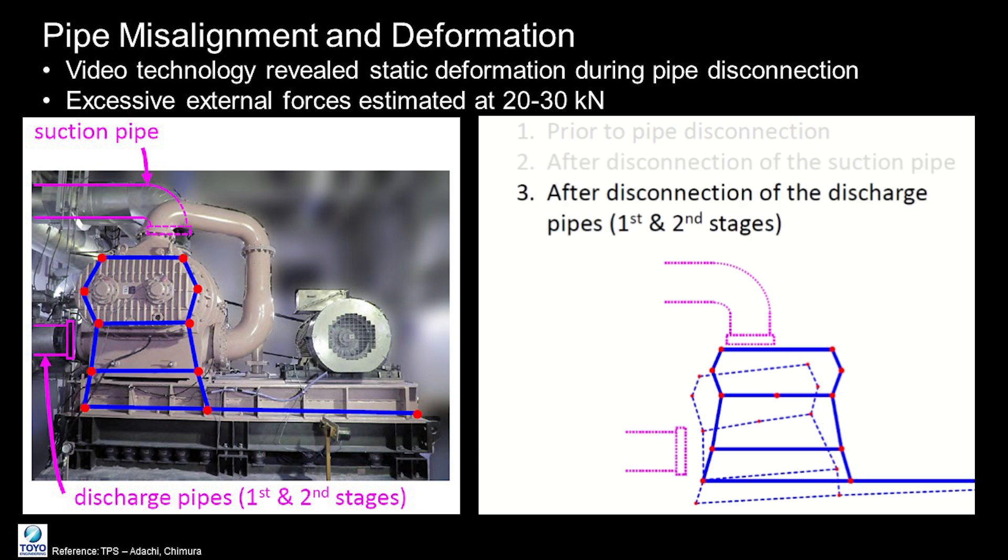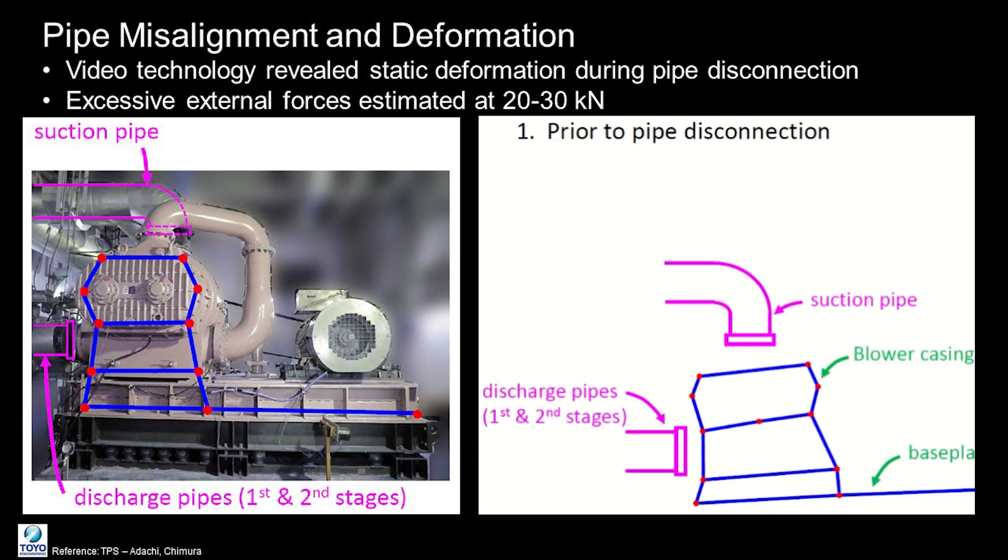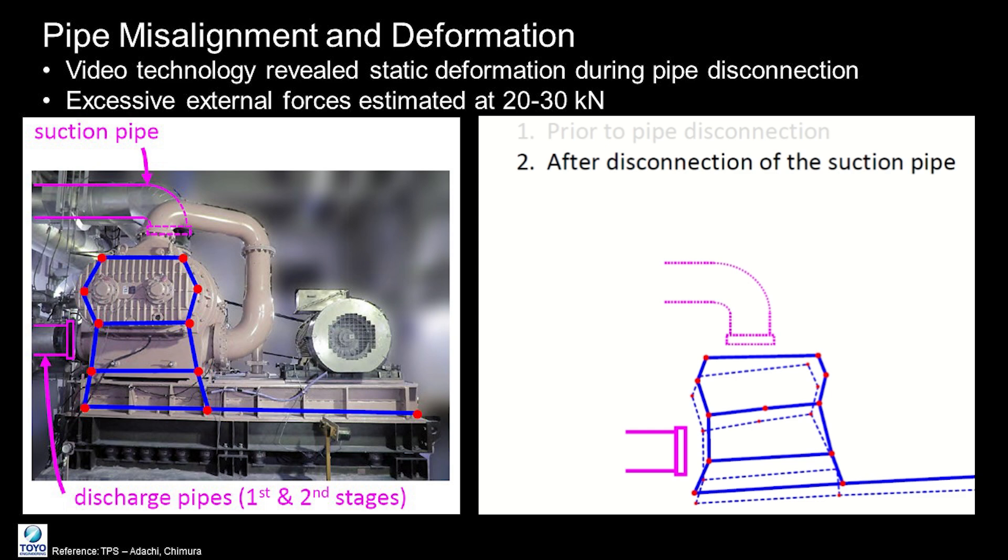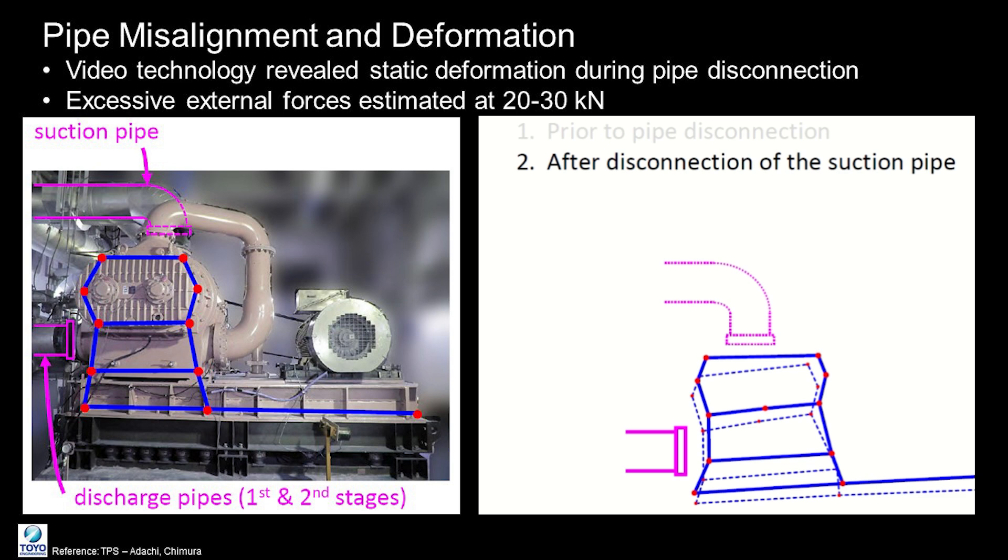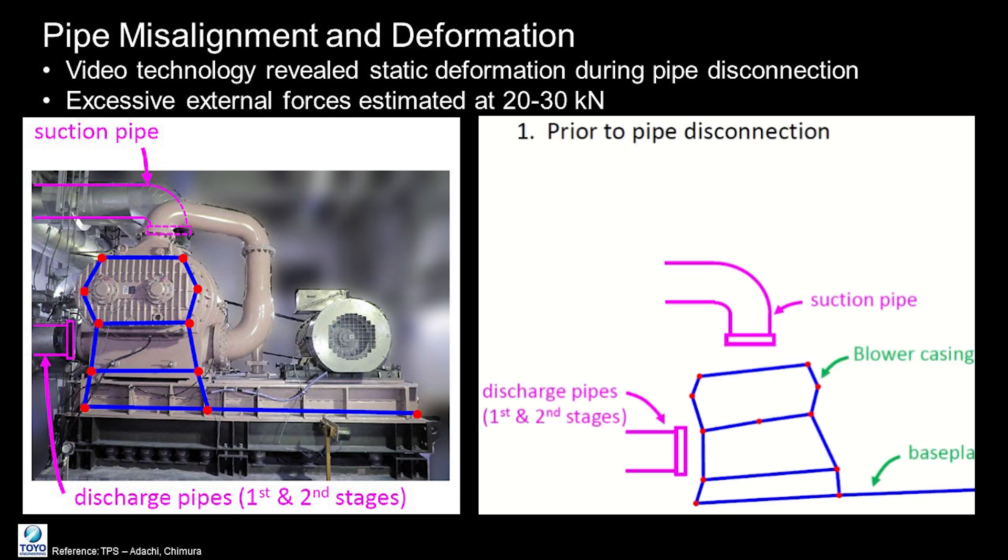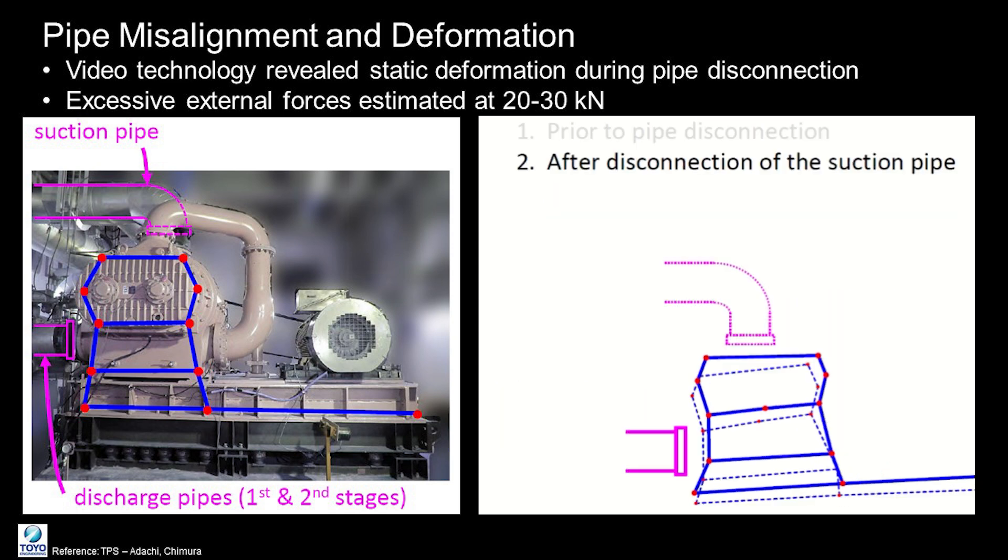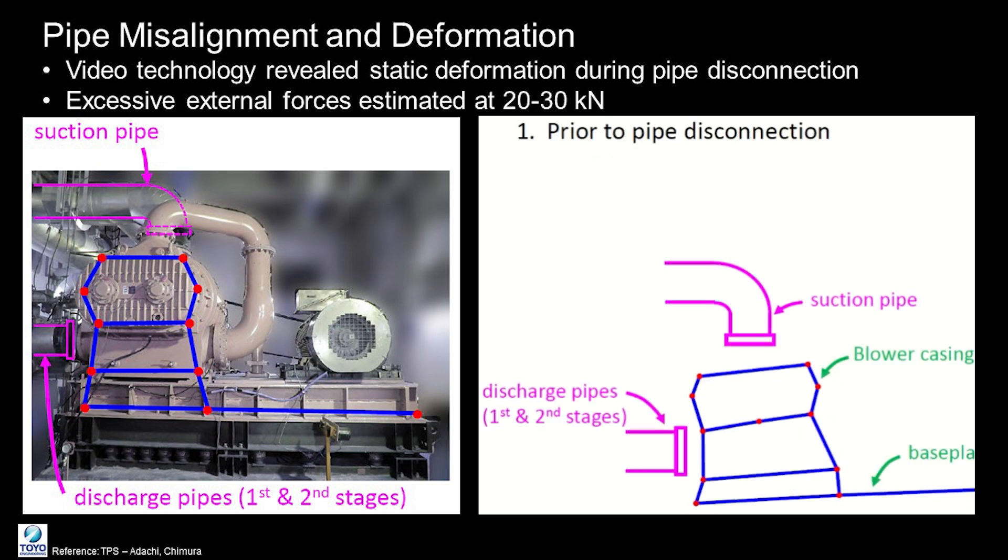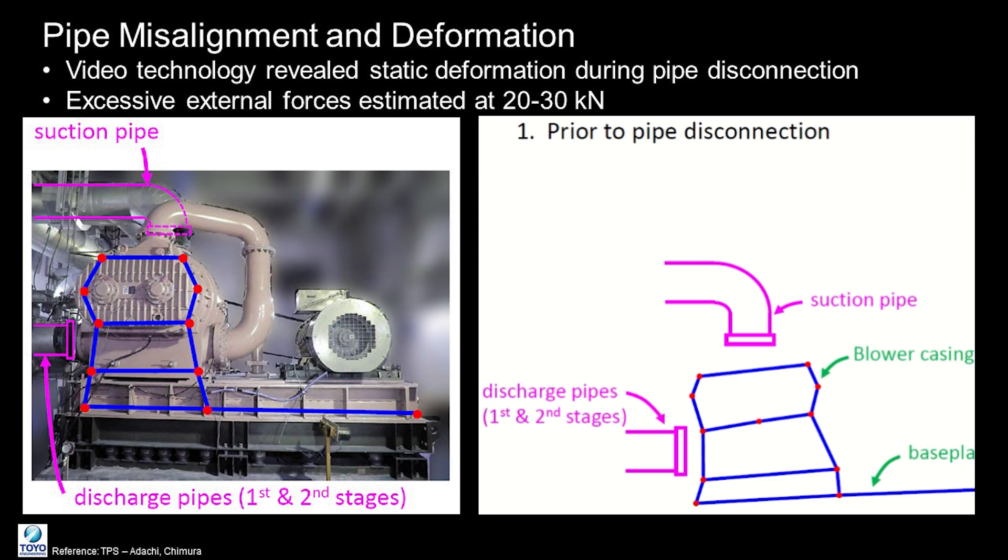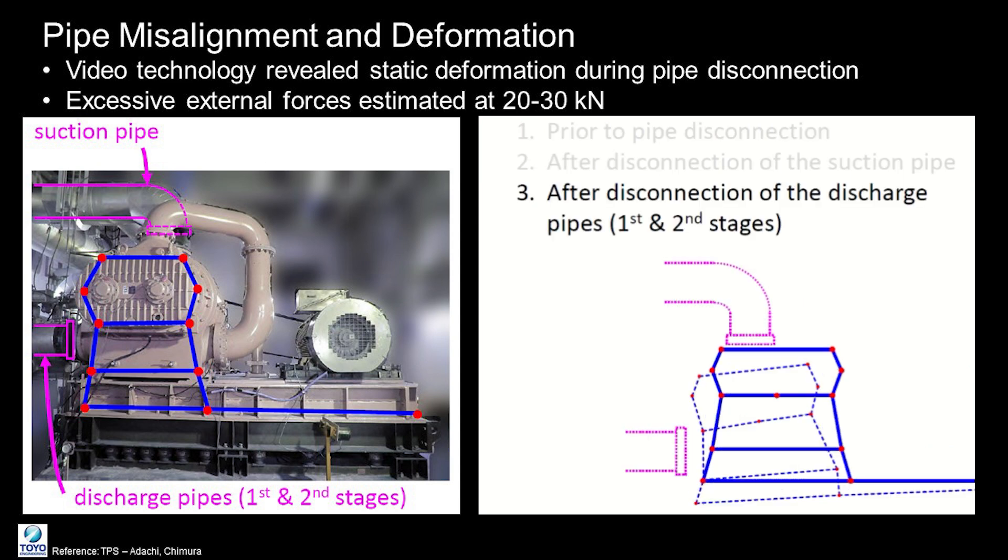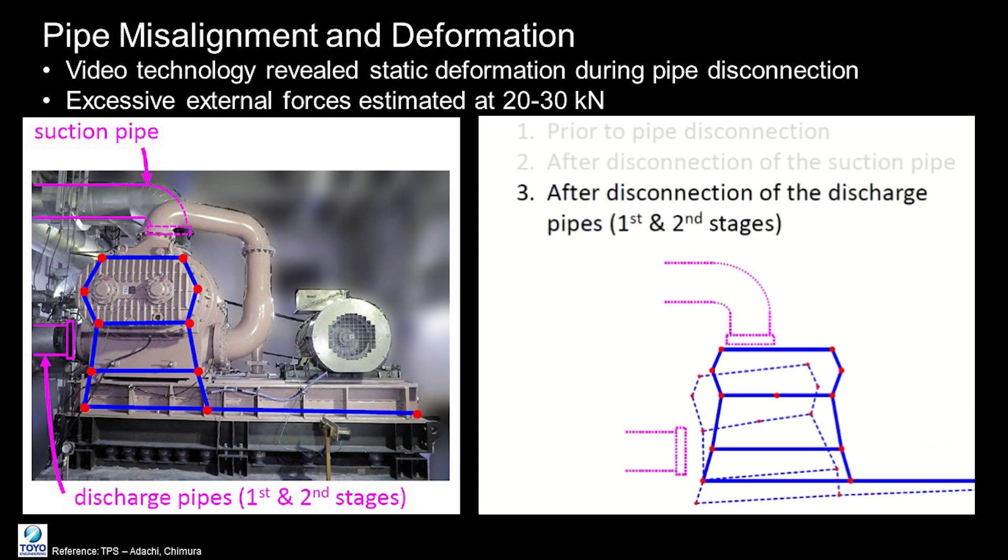Alongside structural resonance, it was also suspected that excessive excitation was contributing to the vibration issues. Video-based motion enhancement technology was used to visualize the deformation of the blower casing caused by misaligned pipes. This external force was found to largely affect both the 46 Hz and 93 Hz vibrations. To confirm the effect of pipe misalignment, the suction and discharge pipes were disconnected one by one. The video-based technology allowed observation of the static deformation of the equipment, confirming that excessive pipe external forces were causing casing vibration.